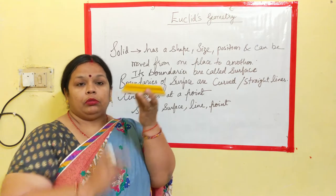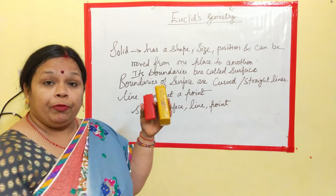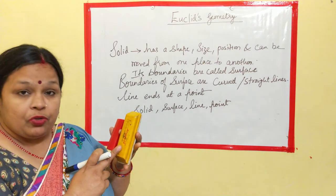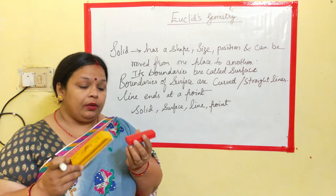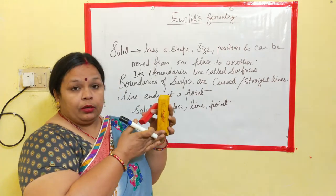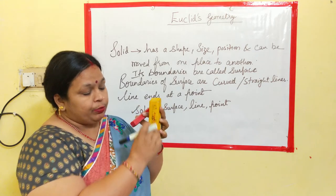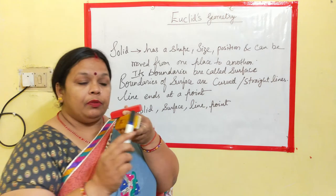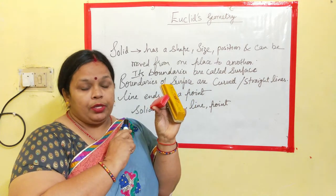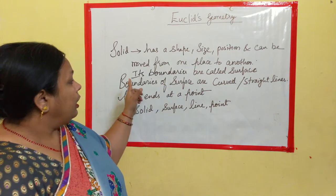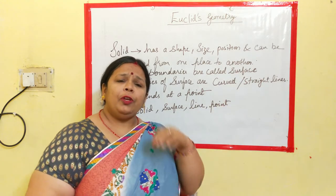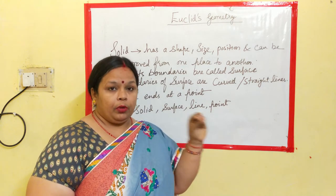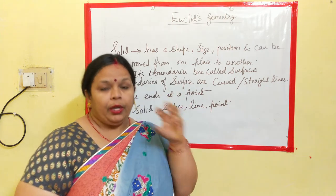Another duster is there where the shape is different. It can be moved, it has a shape, its position can be determined and it can be moved from one place to another. Now what exactly I want to explain here is the upper part is called the plane. These are its boundaries. Now boundaries may have a curve or a straight line.